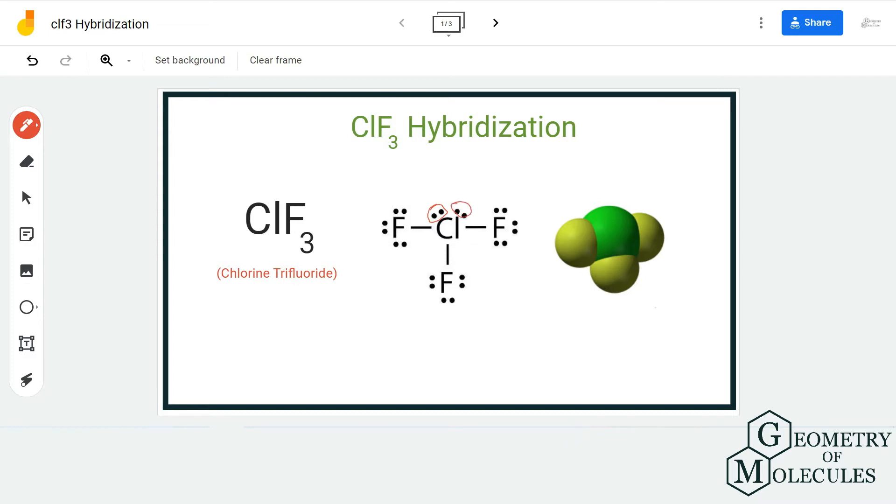Whenever we are considering molecular geometry and hybridization, we take into consideration all these factors, which means the bonds that are formed and the lone pairs. This atom has to know the hybridization or the molecular geometry of this given molecule.